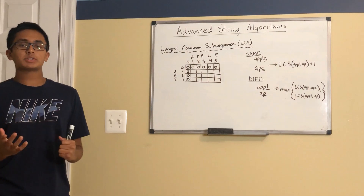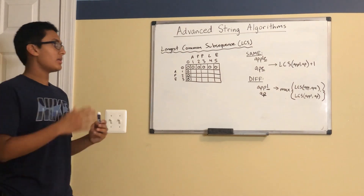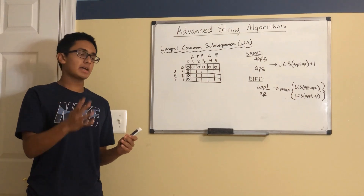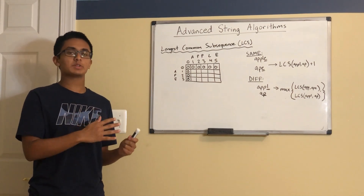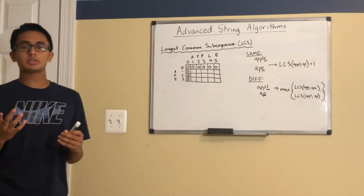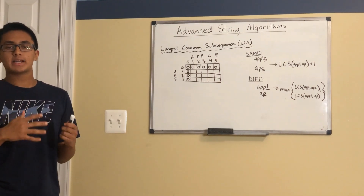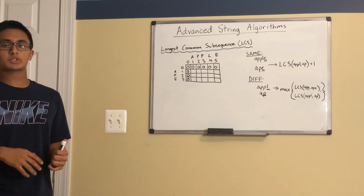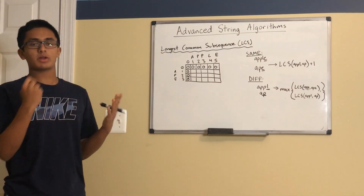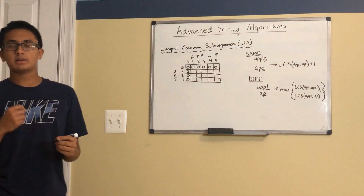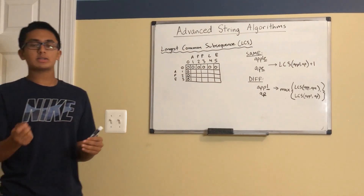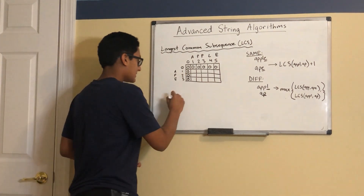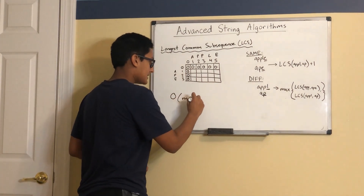The naive solution to this problem would be to generate all the subsequences of one string and then check whether they are also subsequences of the other string. Since there are 2^n subsequences in a string of length n — because you can either include or not include every single character — the runtime for this is O(m × 2^n), where m is the length of one string and n is the length of the other.